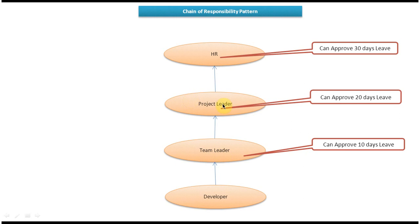The team leader will send that leave request to the project leader. The project leader checks whether he can approve 25 days leave — as per company rule, the project leader can approve only 20 days, so he can't approve 25 days. The project leader then sends the request to HR. HR can approve up to 30 days, so since the request is for only 25 days, HR will approve it. This is the chain of responsibility.